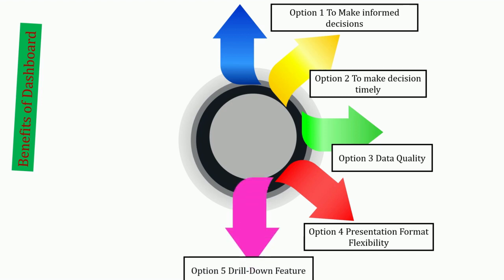The fifth benefit is the Drill Down feature. It allows you to see your data aggregates as well as subcomponents. For example, for sales data, you can see the data by total sales, and sales by branches, by manager, by supervisor, by employee, and by product. So you can drill down and drill up your data.